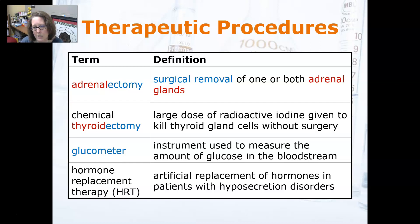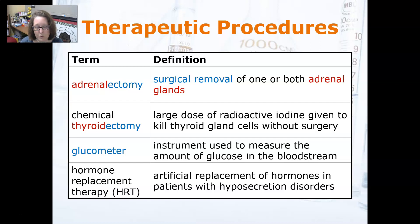A glucometer is an instrument used to measure the amount of glucose in the bloodstream. It is used to manage diabetes. There are some newer generation continuous glucose monitors that are really neat — you can insert one in an arm and it monitors your blood sugar continuously for a couple of weeks. Then you have to change it out, but it's nice because it interfaces with a smartphone.